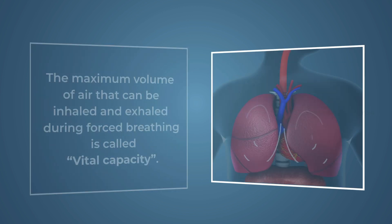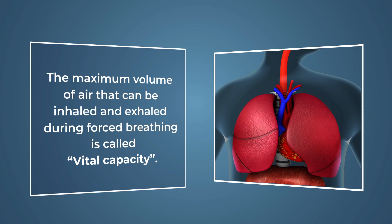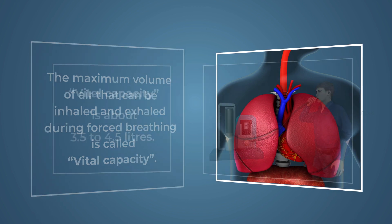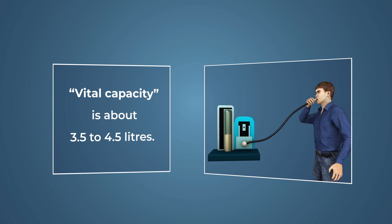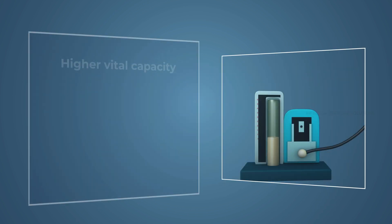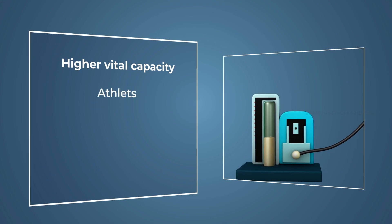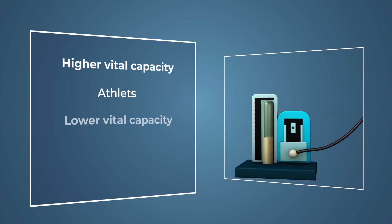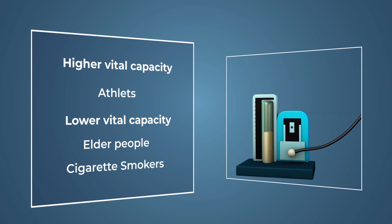The maximum volume of air that can be inhaled and exhaled during forced breathing is called vital capacity; it is about 3.5 to 4.5 liters. Vital capacity is higher in athletes and mountain dwellers, and lower in elderly people and cigarette-smoking persons.